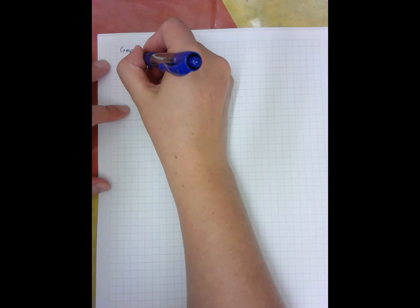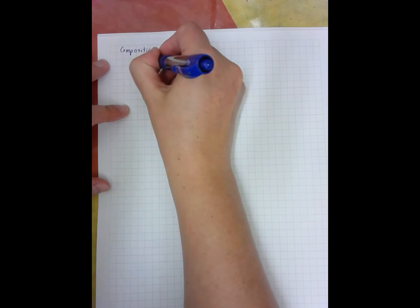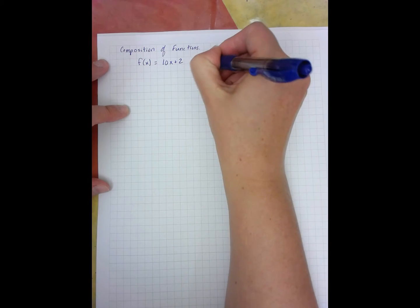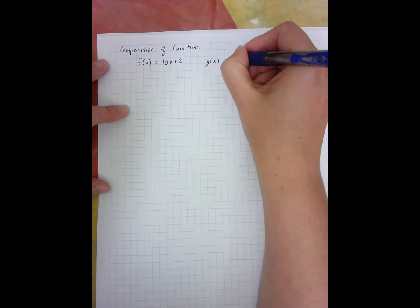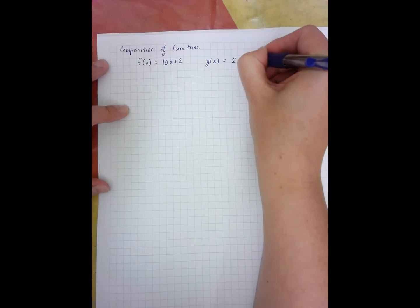So let's look at an example. I have f of x equals 10x plus 2, and g of x equals 2x squared plus 10.